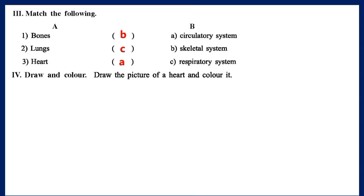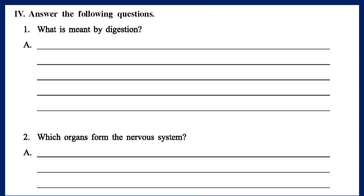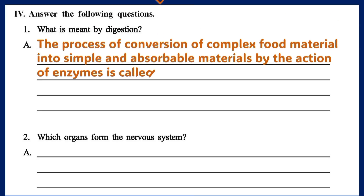Section IV: Draw and color — Draw the picture of the heart and color it. Question 1: What is digestion? Answer: The process of conversion of complex food material into simple and absorbable materials by the action of enzymes is called digestion.